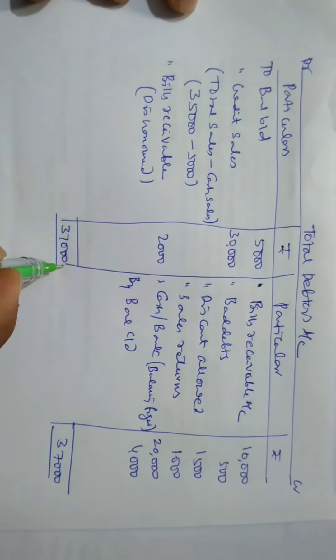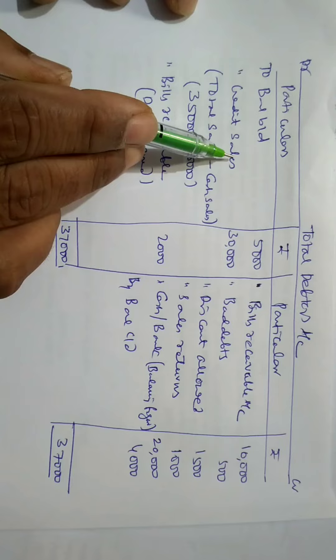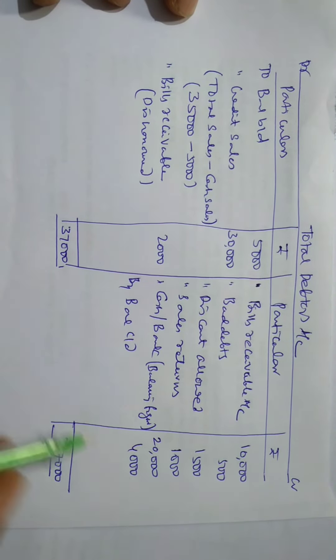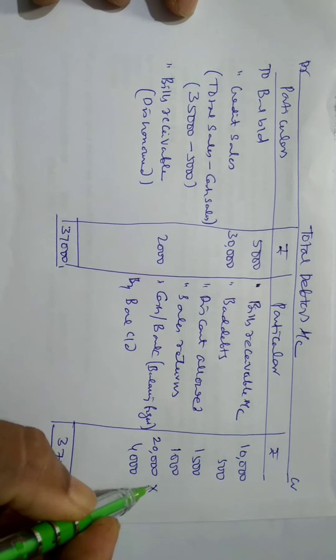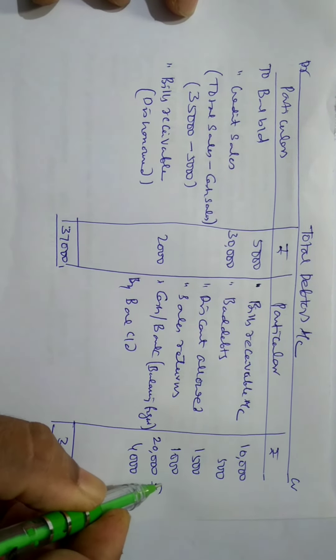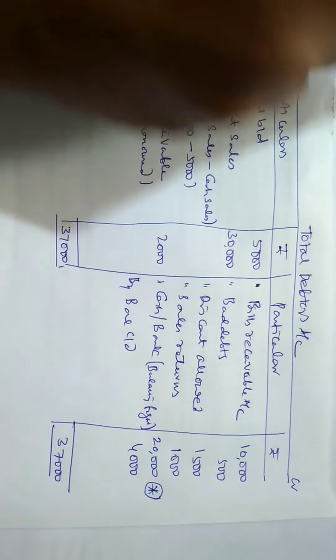So, in this way, debtors account is prepared. Usually, debtors account or the difference or balancing figure will be the credit sales. But, sometimes the balancing figure may be cash or bank. This is the balancing figure in this problem. This is very important adjustment in this problem. Thank you. Jai Hind.